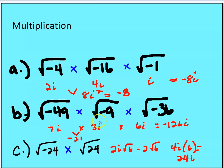For part (c): the square root of negative 24 times the square root of 24 — simplified, that's 2i root six times 2 root six. We multiply the real parts together: 4 times i times 6, because the square root of six times the square root of six is six. So we're left with 24i.